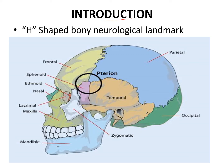First you will give an introduction. What is the Pterion? This is an H-shaped bony neurological landmark. Here you can see there are some bones, namely the frontal bone, the parietal bone, the squamous part of the temporal bone, and the greater wing of sphenoid. Where these bones unite, you have an H-shaped suture — and this is the Pterion.